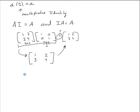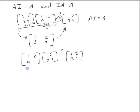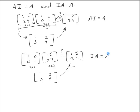Now I also need to check the other direction: I × A = A. Taking the identity matrix times [1,2,3,4]: 1×1 + 0×3 = 1, 1×2 + 0×4 = 2, then finishing off gives 3 and 4 as well. These are equal, confirming that the identity matrix times the original matrix equals the original matrix back.